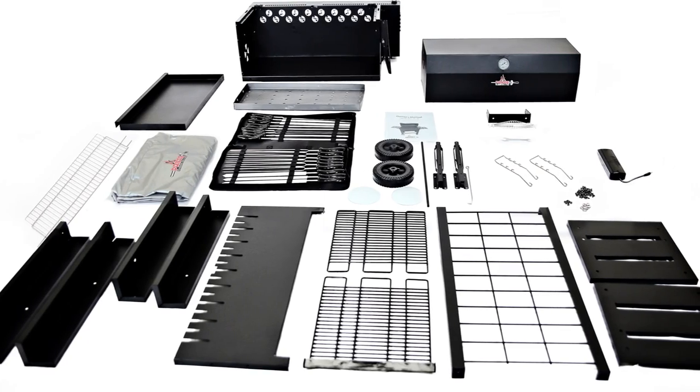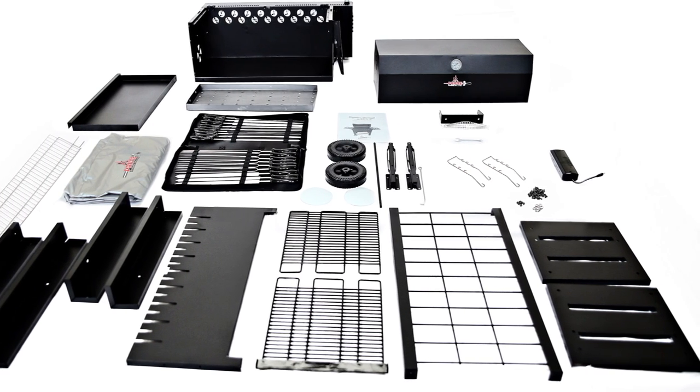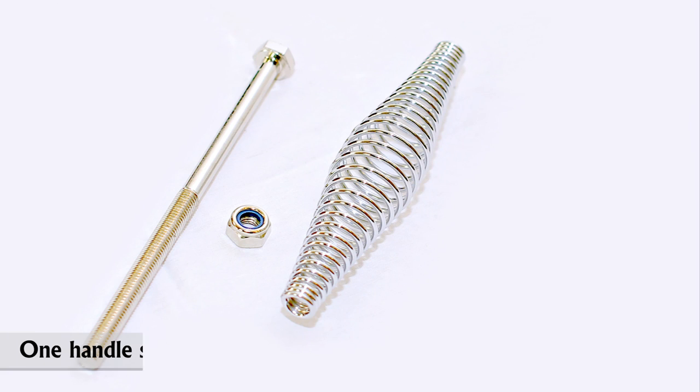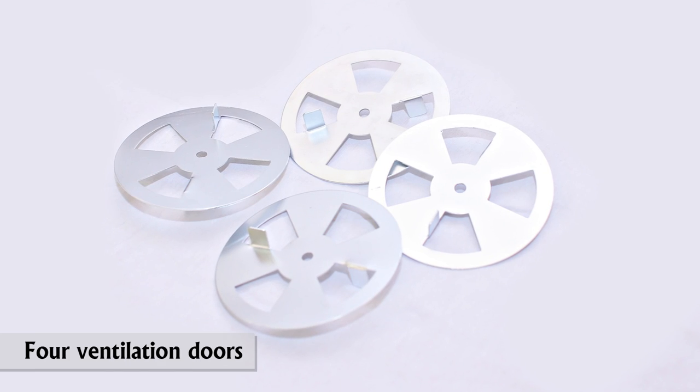First, let's go through your component list. You should have the following parts in your box. One main lid and one handle bracket, one handle spring, one handle bolt and nut, and four ventilation doors.